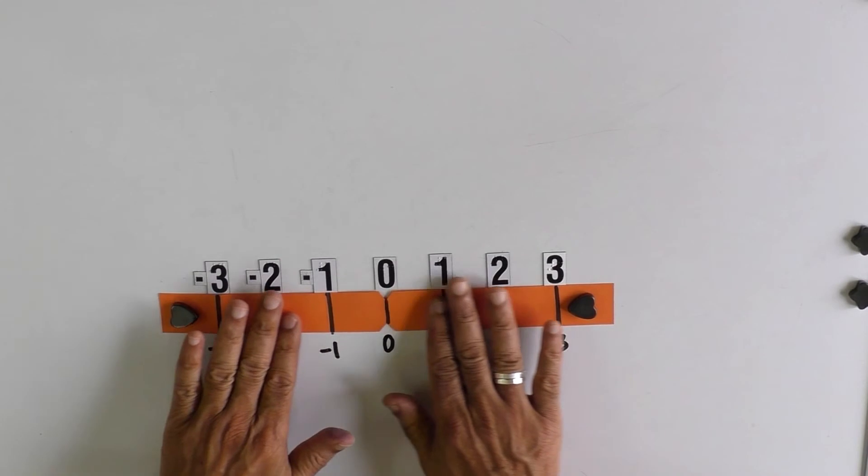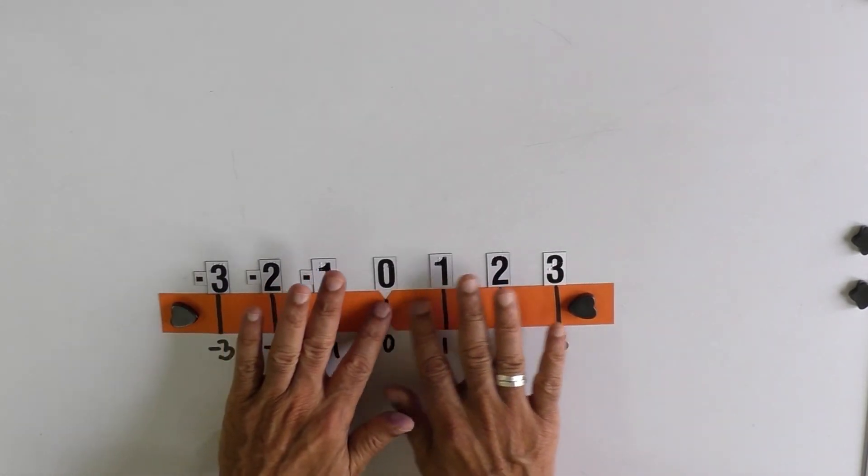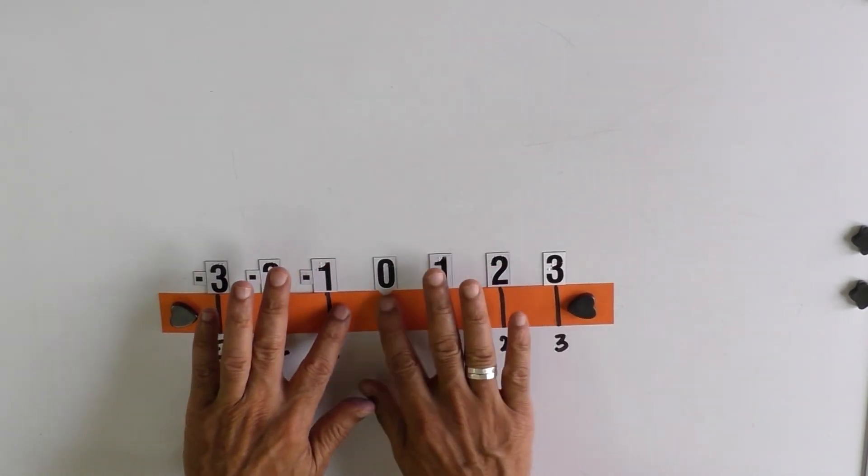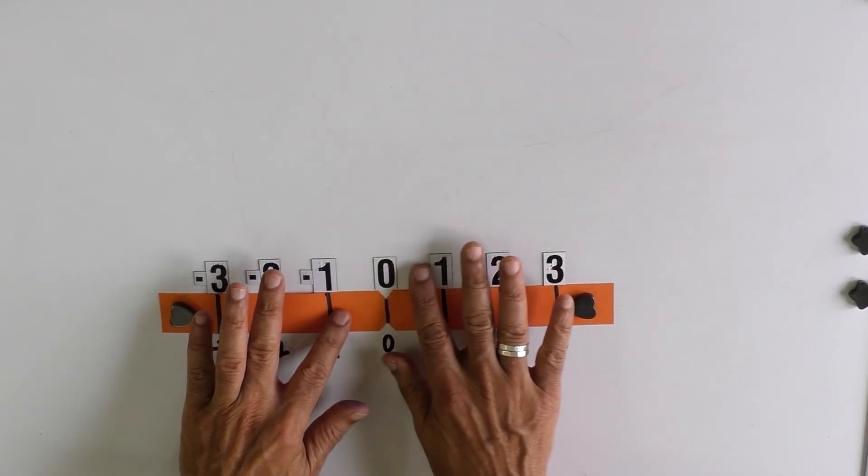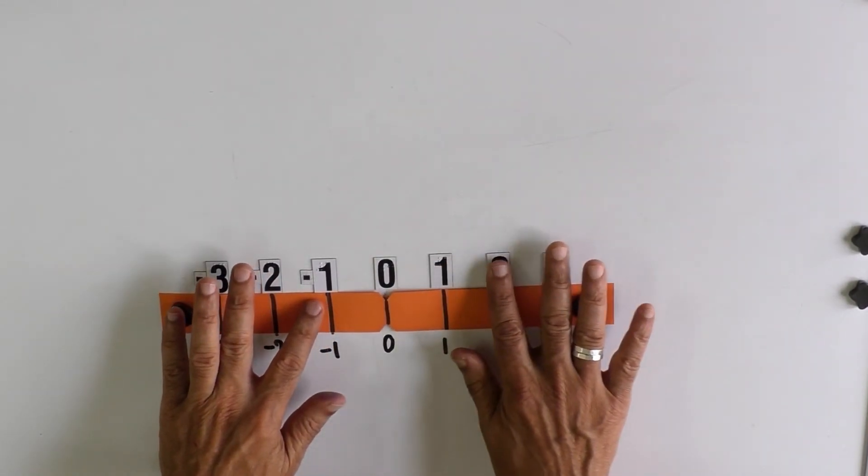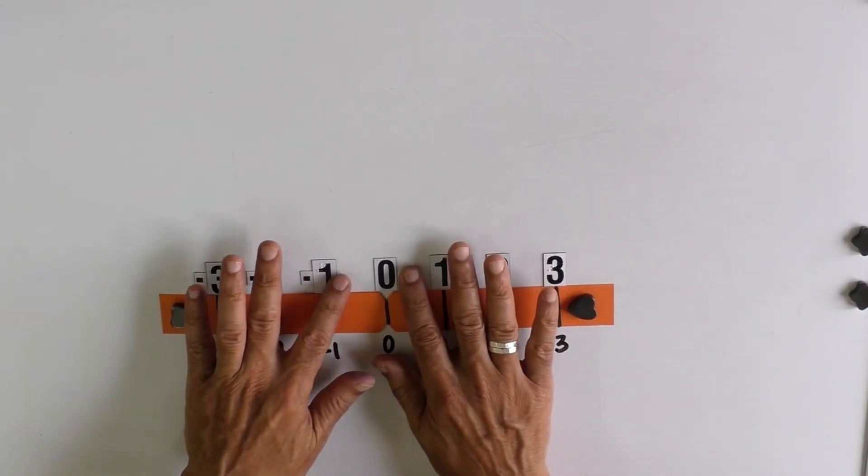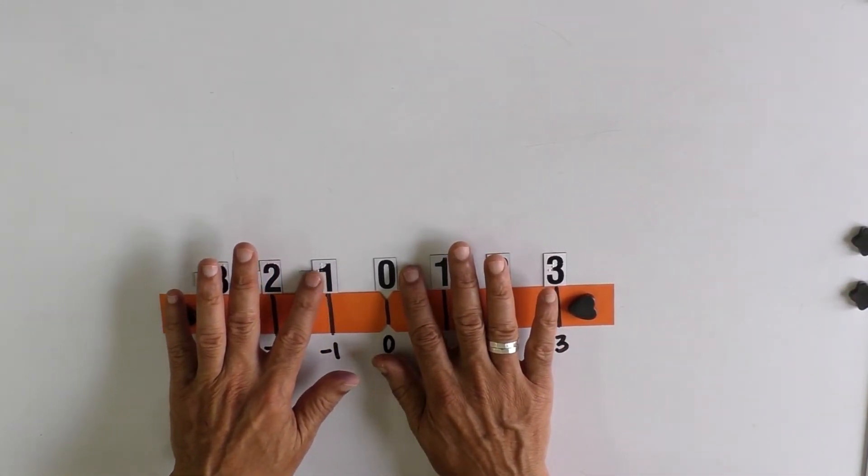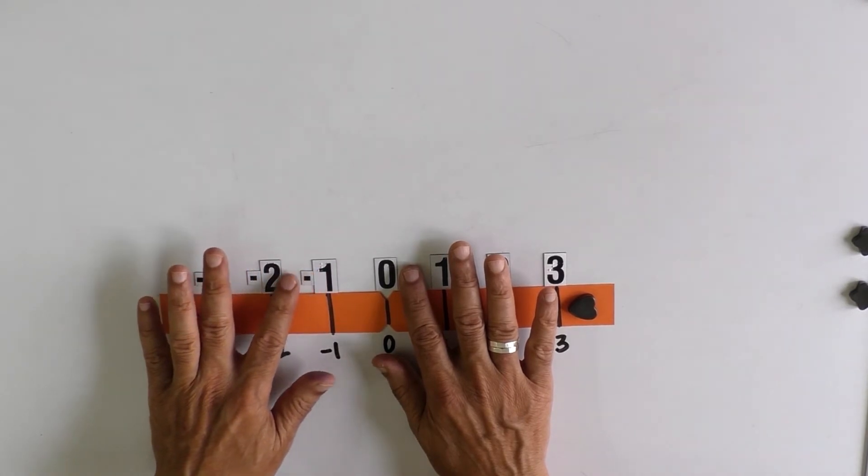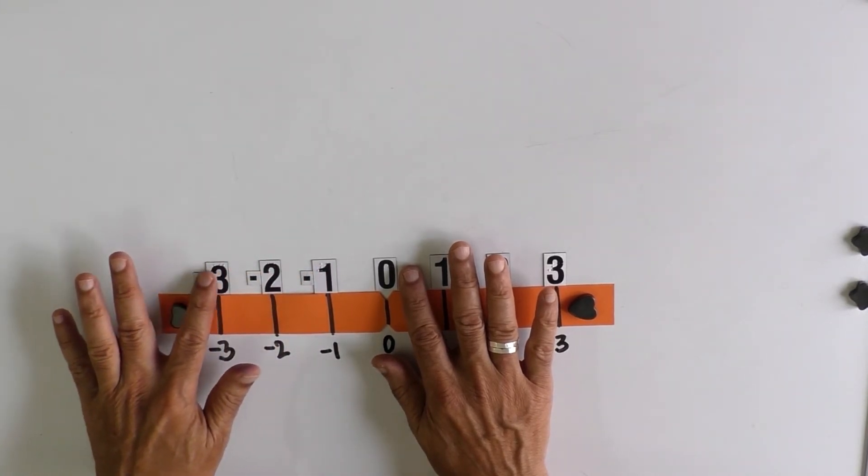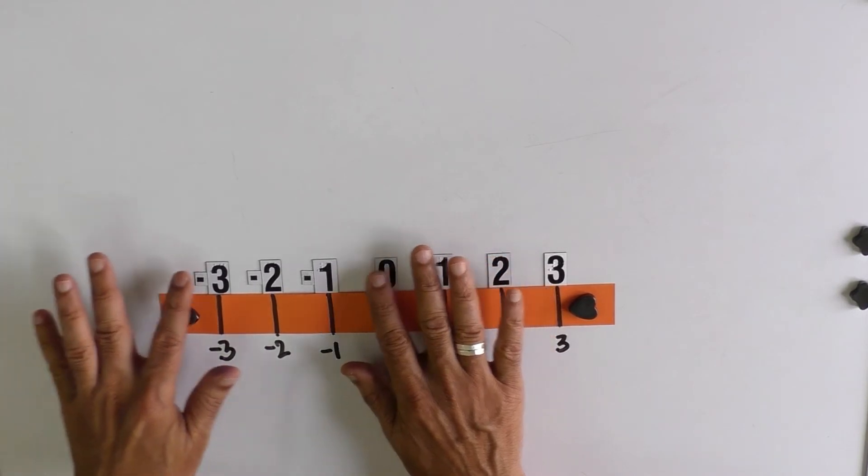Right, now this is a number line. Help the child to identify where the midpoint is 0, and then 1, 2, 3, and goes on and on. On the minus side it is minus 1, minus 2, minus 3, and goes on.